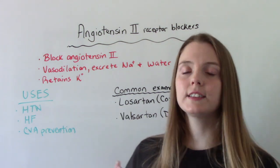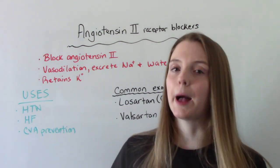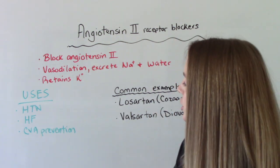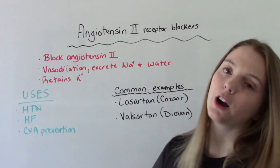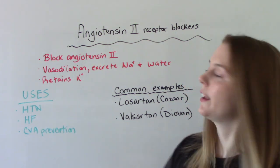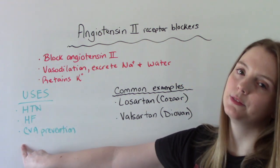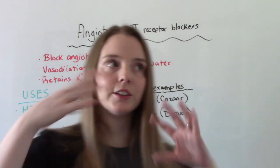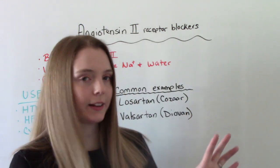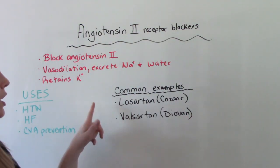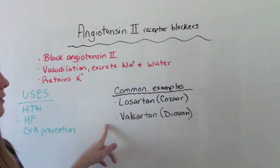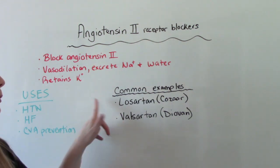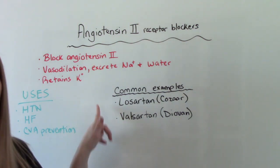What are these types of meds commonly used for? Treating hypertension, heart failure, and prevention of stroke. The two most common types are Losartan and Valsartan. These are the most common ones you'll see, but of course there are others.